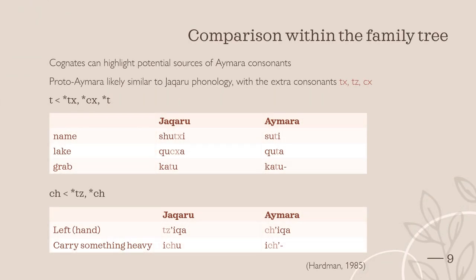Due to the three extra consonant series in Jacare, cognates between Aymara and Jacare can be used to identify where Aymara consonants originated from. Proto-Aymara was likely similar to Jacare, particularly in regard to the phonology. With this in mind, these three consonants can be looked at in further detail, as they have somehow disappeared in modern Aymara. Upon looking at these consonants in cognates between Jacare and Aymara, they appear to correlate to T and CH in modern Aymara, with the possible proto-language sources visible below.